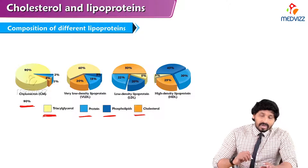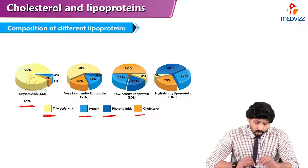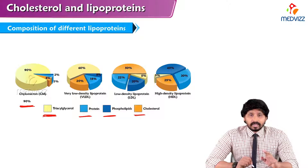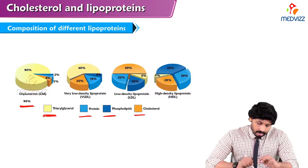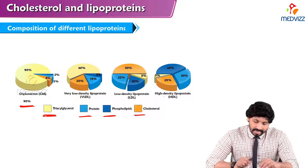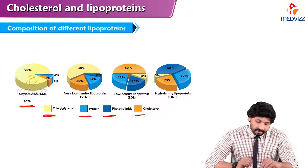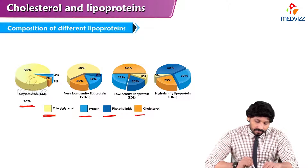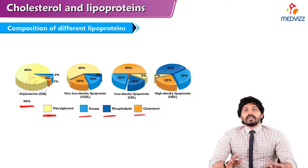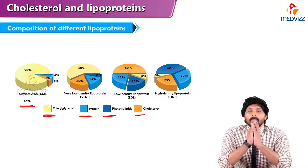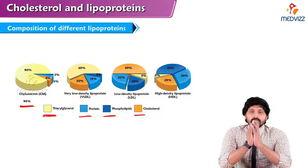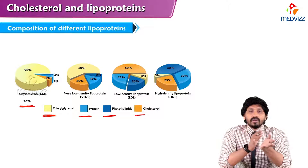For low density lipoprotein: 22% is protein, 50% cholesterol, 8% triglycerides, and 20% phospholipids. For high density lipoprotein, it has much higher cholesterol content compared to triglyceride concentration, and is rich in phospholipids at 40% and 30% protein. So HDL has much more protein and cholesterol content compared to the other lipoproteins.